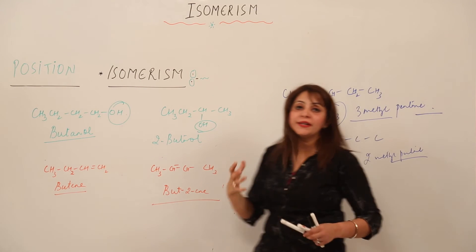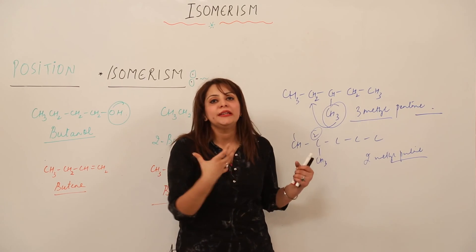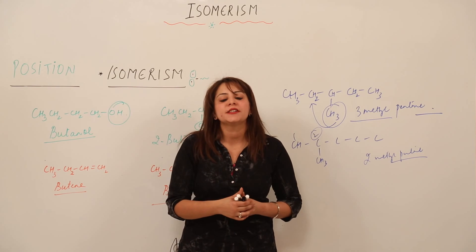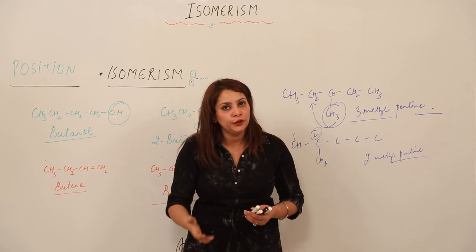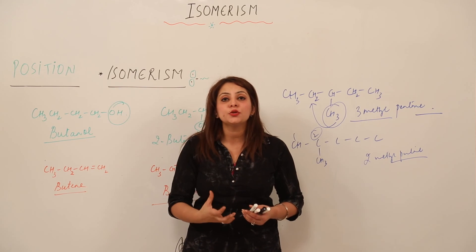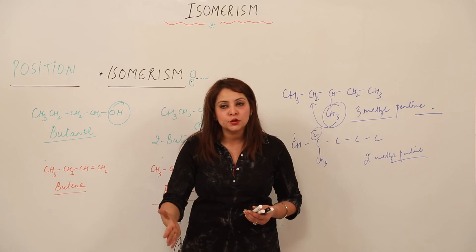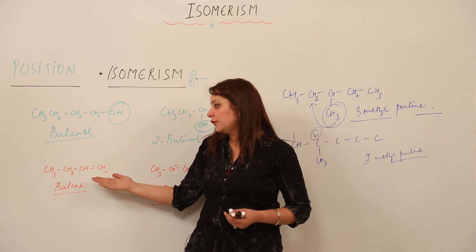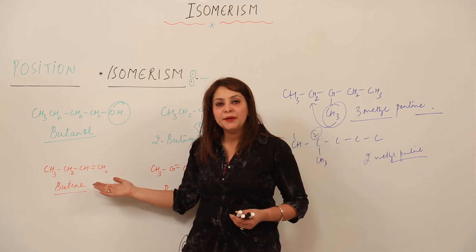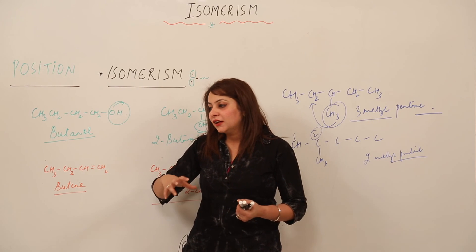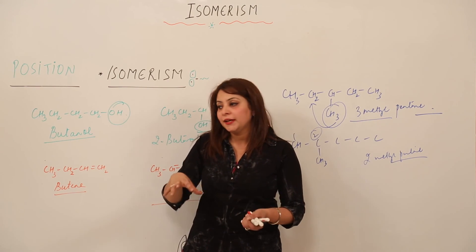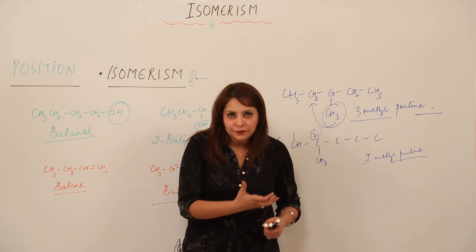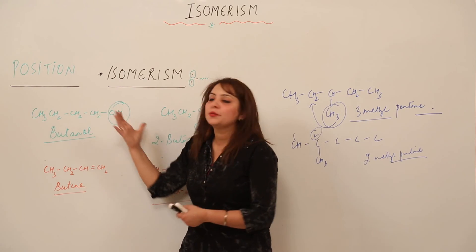By changing the position of the substituent, these compounds exhibit position isomerism. Position isomerism is when compounds have the same molecular formula but differ in the position of a substituent, functional group, or double and triple bond. This means there can be a change in the primary suffix, the position of the secondary suffix, or a change in the position of the prefix.